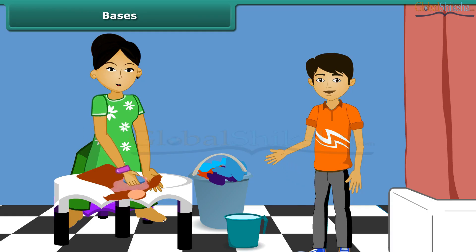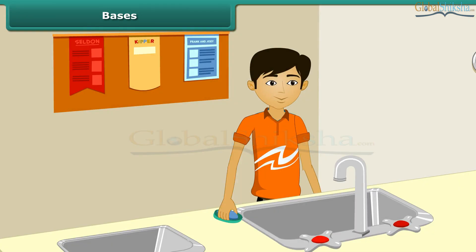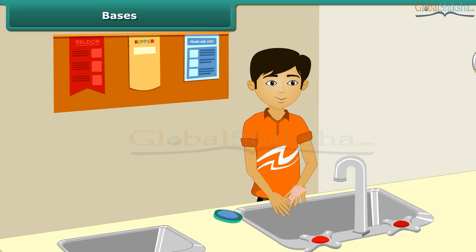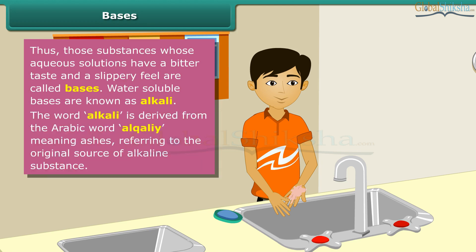We wash our clothes every day with soap. Do you know which kind of solution it is? Soap solution tastes bitter and on rubbing on the palm, it gives a slippery feeling because it contains a base. Thus, those substances whose aqueous solutions have a bitter taste and a slippery feel are called bases. Water-soluble bases are known as alkali. The word alkali is derived from the Arabic word 'alkali' meaning ashes, referring to the original source of alkaline substance.